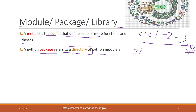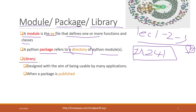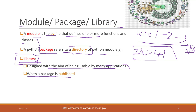In this class, we have RA 241, which can be considered a Python package. A Python library is designed with the aim of being used by many applications, and it is also published — so if you search online, there are a lot of Python libraries available. I mentioned in our first class that one reason we want to use Python is because there are a lot of Python libraries available, so we can use those modules that are already defined and created by other people.